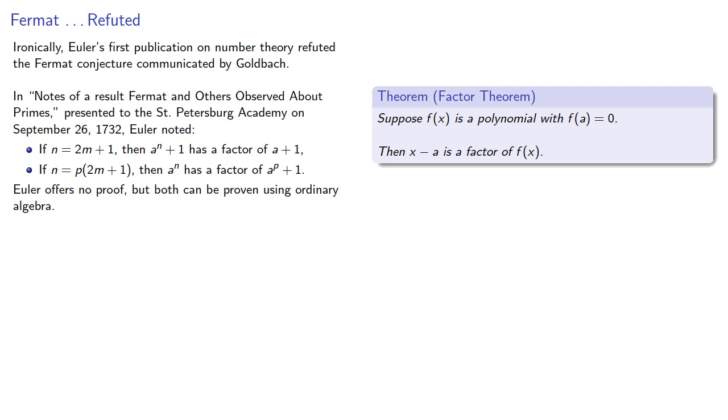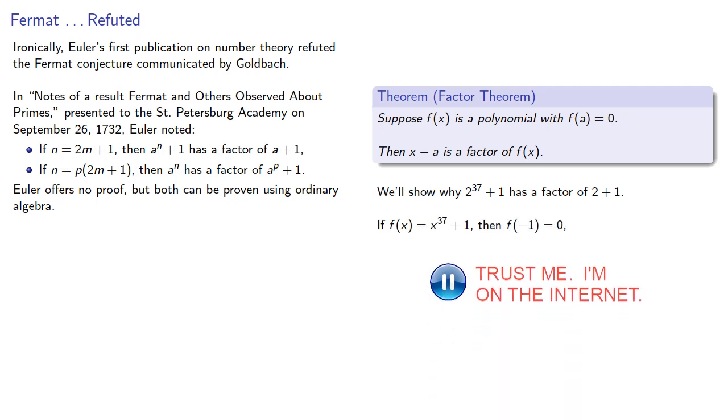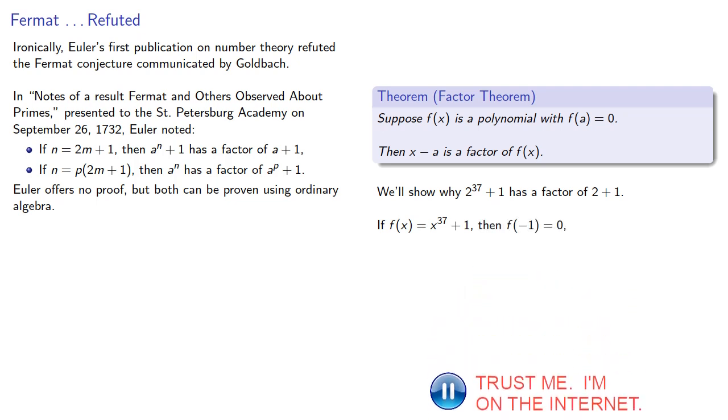And as an example that we'll easily generalize into a proof, we'll show why 2 to the power 37 plus 1 has a factor of 2 plus 1. If f of x is x to the 37 plus 1, then f of negative 1 is 0.